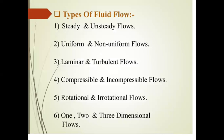There are six types of fluid flow. The first one is steady and unsteady flow. The second type is uniform and non-uniform. The third is laminar and turbulent. The fourth one is compressible and incompressible flow. The fifth one is rotational and irrotational flow. The last one is one, two, and three dimensional. We'll see one by one how each type is defined.